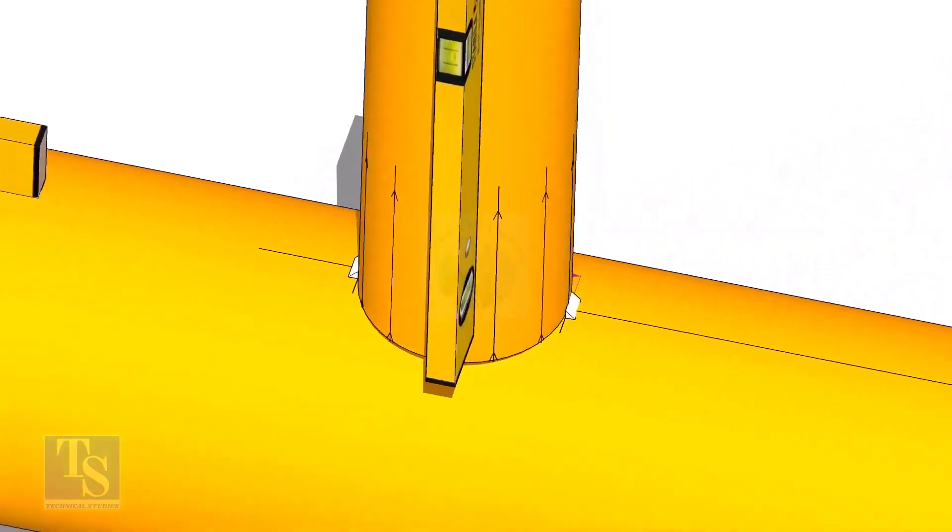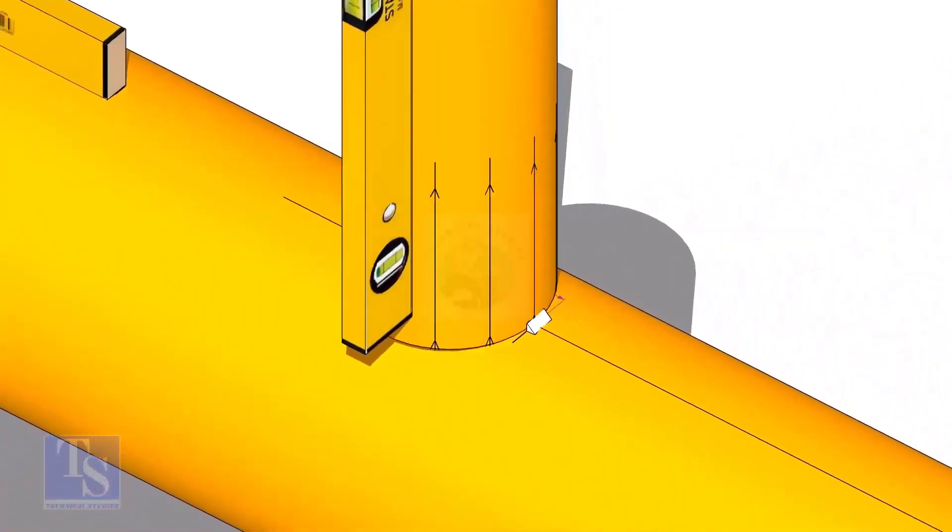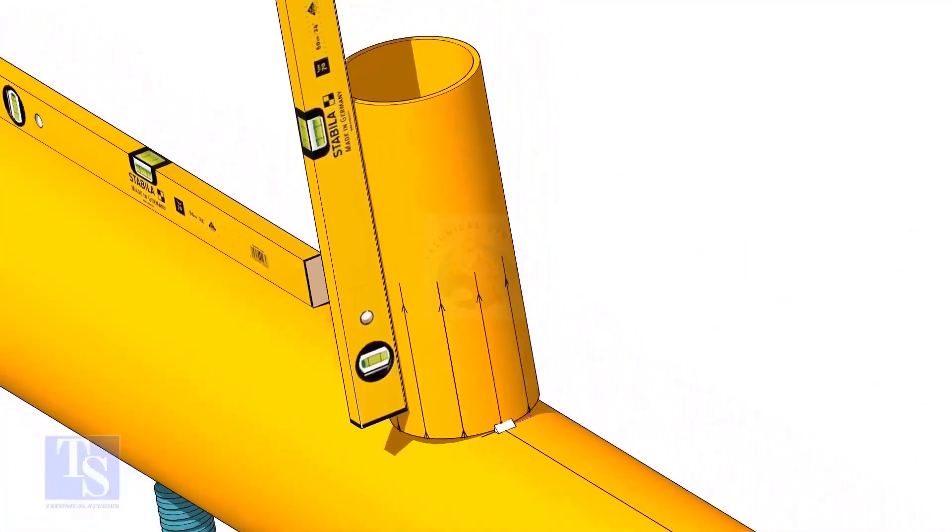Now, make sure the pipe header and the branch are horizontally and vertically level. If required, strengthen the tack weld.